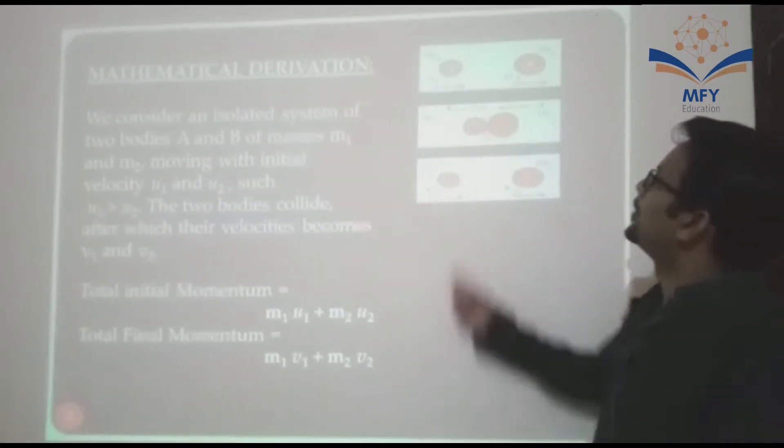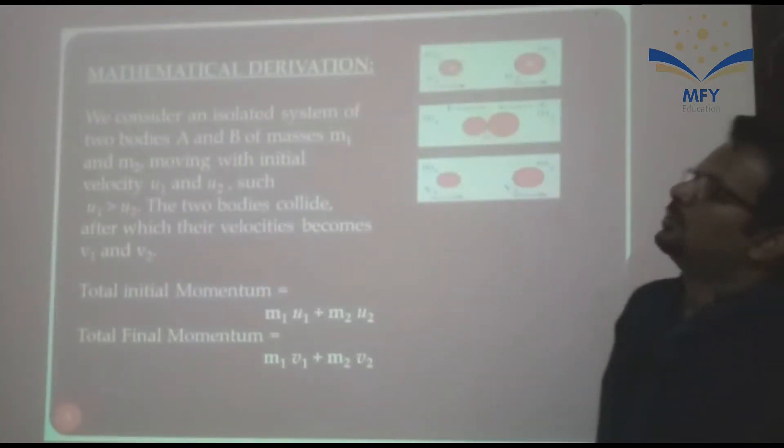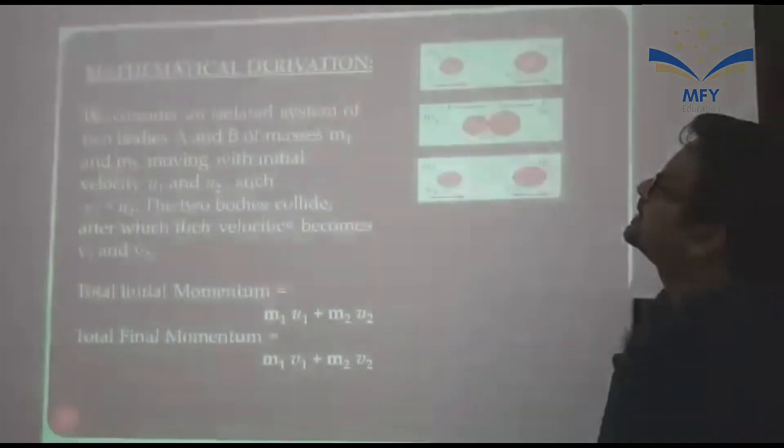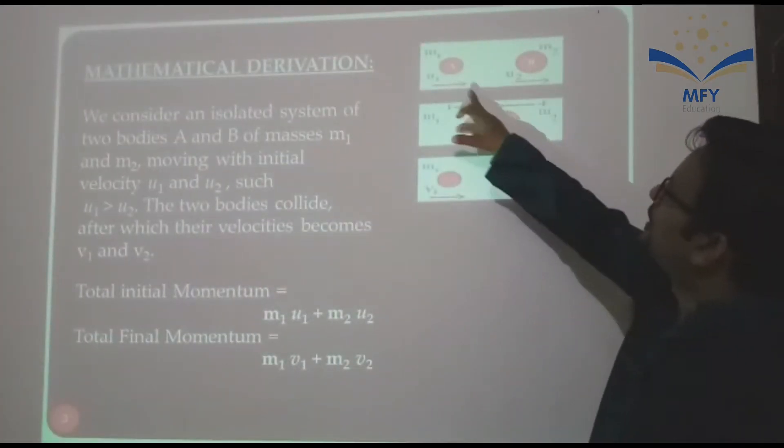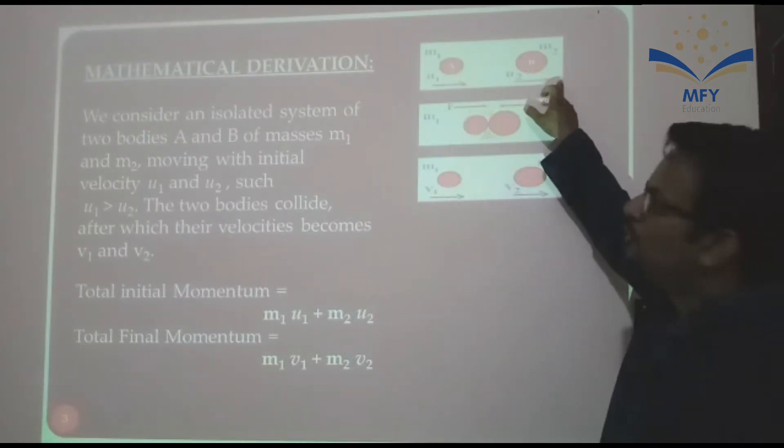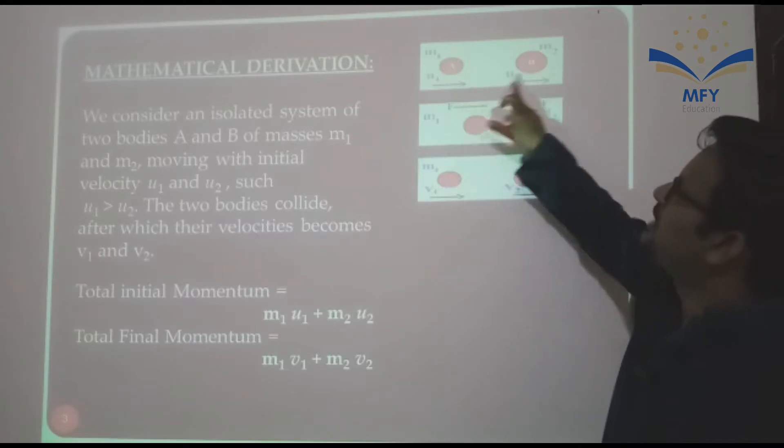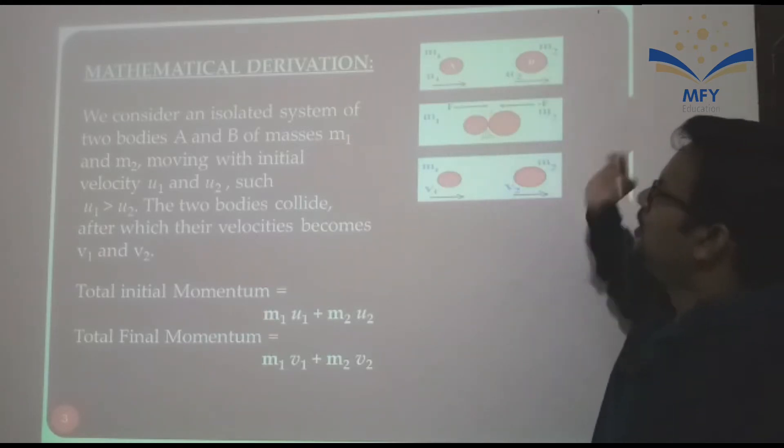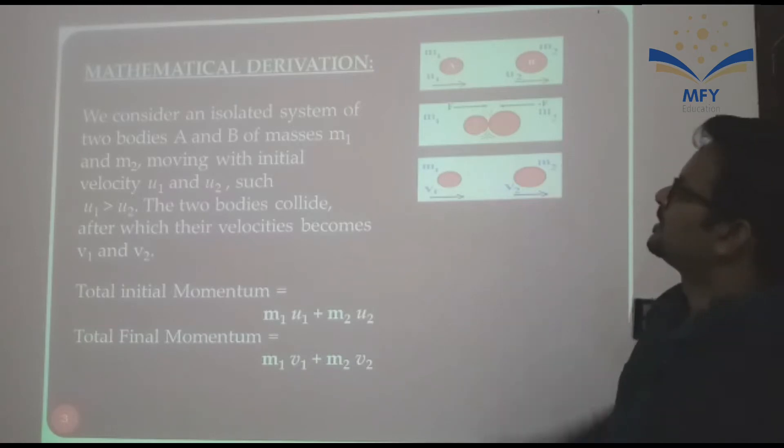So first of all, we consider two bodies A and B. We consider an isolated system of two bodies A and B of masses M1 and M2 moving with initial velocity U1 and U2 respectively, such that U1 is greater than U2. After collision, the velocities become V1 and V2.